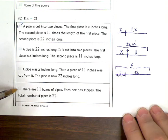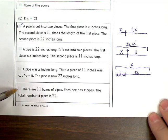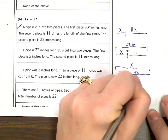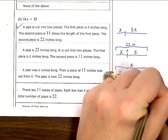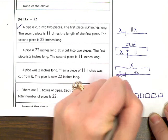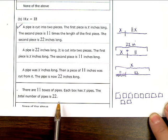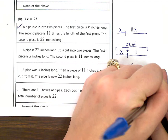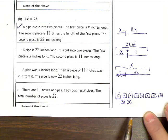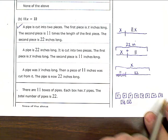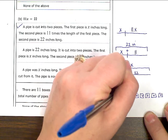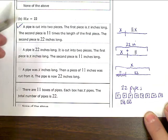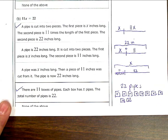Last one, there are 11 boxes of pipes. Each box has x pipes. The total number of pipes is 22. Now this one is multiplication, because if you think of 11 boxes, 1, 2, 3, 4, 5, 6, 7, 8, 9, 10, 11 boxes of pipes, right? And I don't know how many are in each box. We'll just say x, so x in this one, x in that one, x in that one. So on and so forth. I don't know how many is in each box, but they all have the same. So we're just going to say x pipes in each box. But I know all together, between all of the boxes, I have 22 pipes. So 11 boxes times x pipes in each box equals 22. So this one fits. I can check that one, and obviously we won't check none of the above.